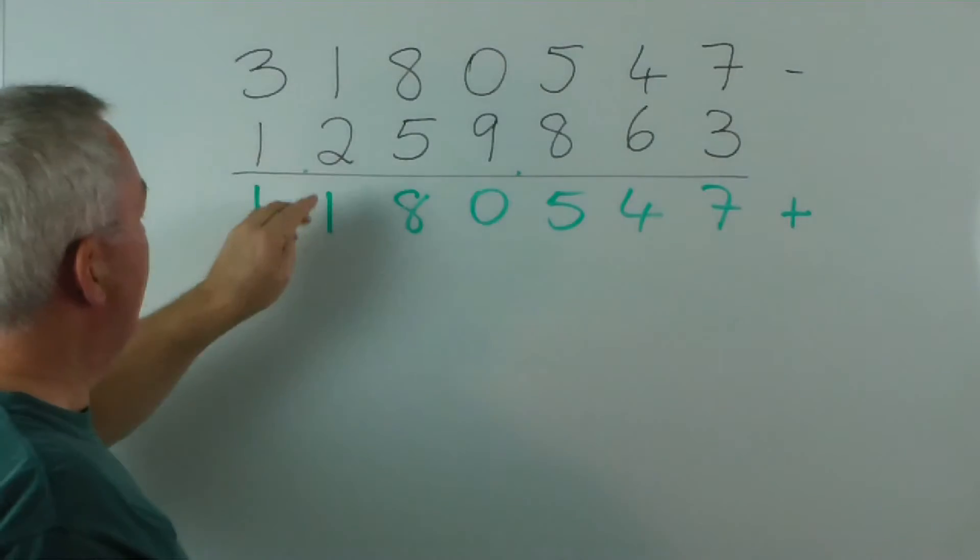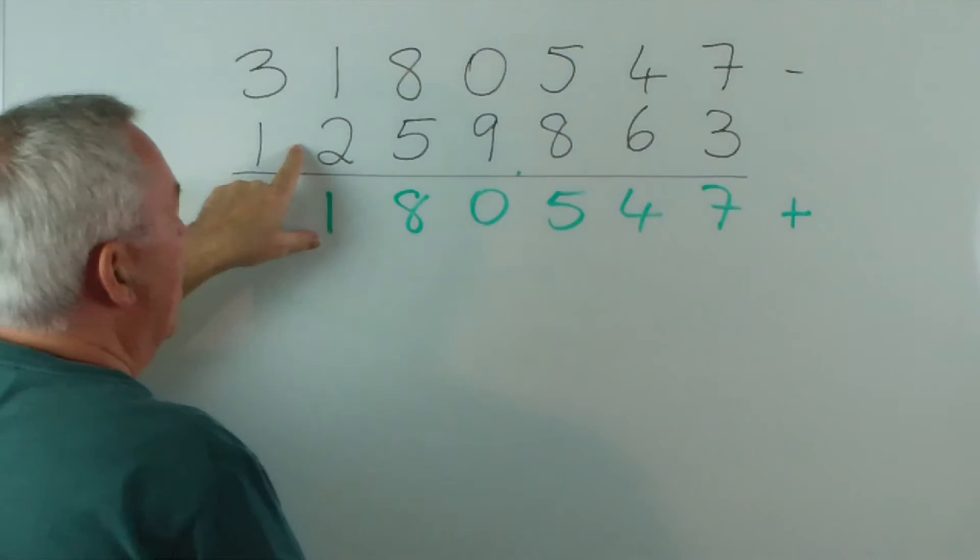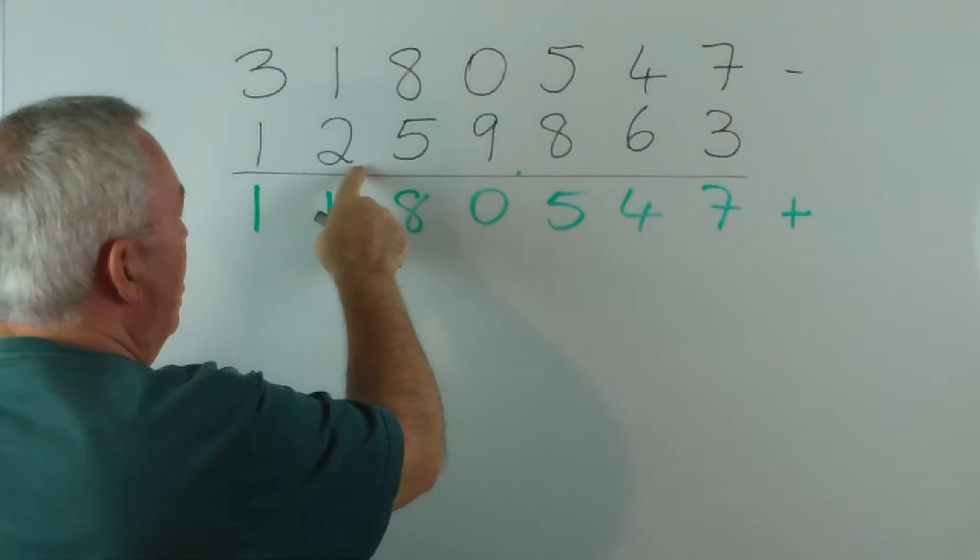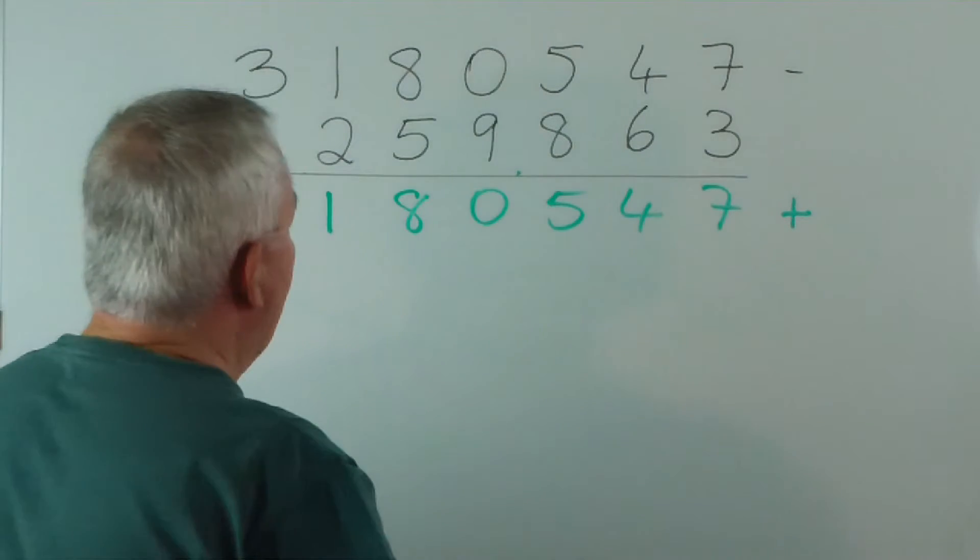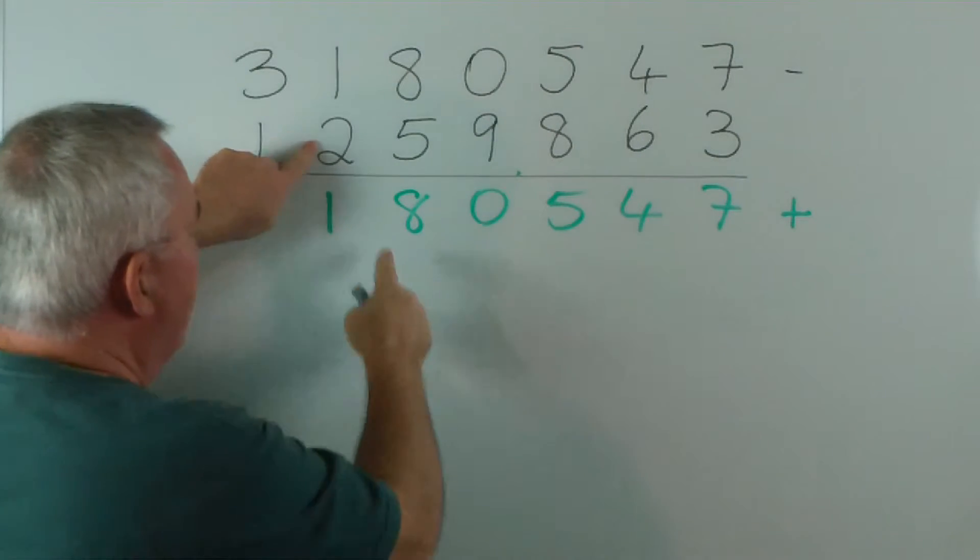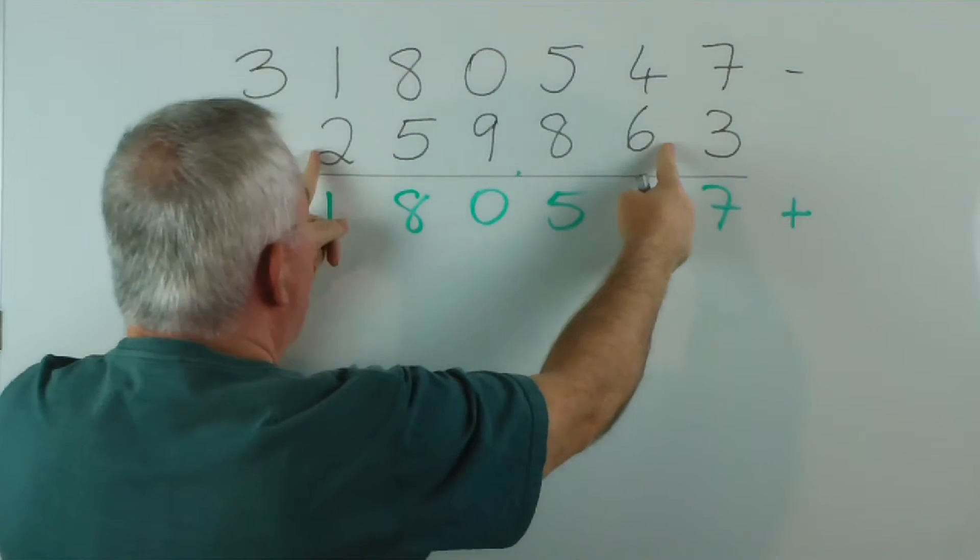And since we subtracted two million, we now have a difference here. We've got to find out how much this number is less than two million. And the way we do it is we subtract these numbers from nine and this one from ten. So, these ones from nine.